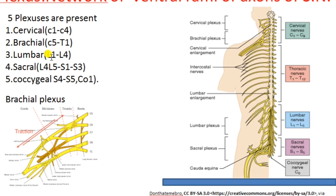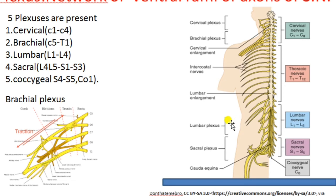The lumbar plexus is formed by lumbar spinal nerves L1 to L4. The ventral rami of these spinal nerves unite to form the lumbar plexus, which supplies fibers to the back, abdomen, groin, thighs, knee, and calf muscles.